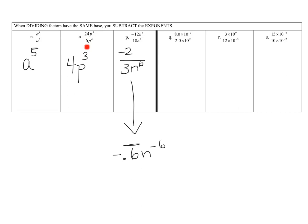Just like we divided 24 by 6 and subtracted exponents, do the same here: 8 divided by 2 is 4. Then 10 minus 2 is 8. So the answer is 4 times 10 to the 8th — that one's in scientific notation.